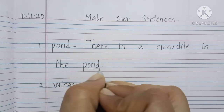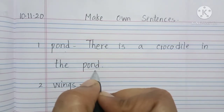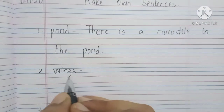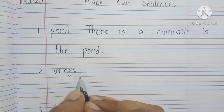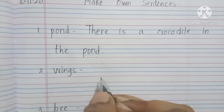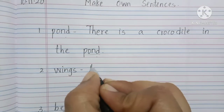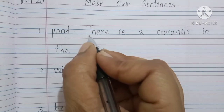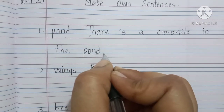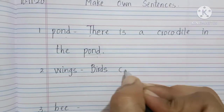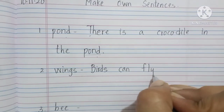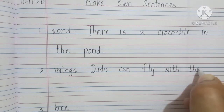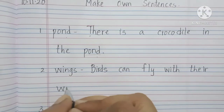So this word pond we have to use it in our sentence. In this way you will be writing the sentence. Now next word will be W-I-N-G-S, wings. We have to use wings in a sentence. We have to begin with the capital letter. Here also I have started with the capital letter and ended with a full stop. Birds can fly with their wings.